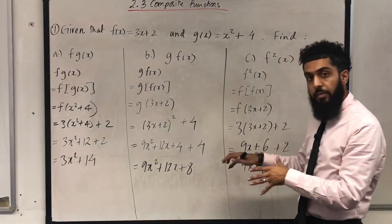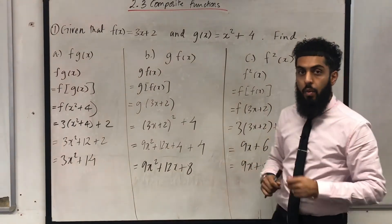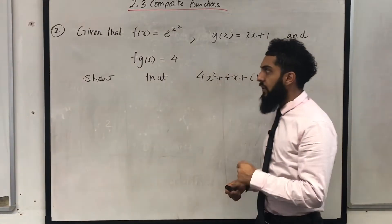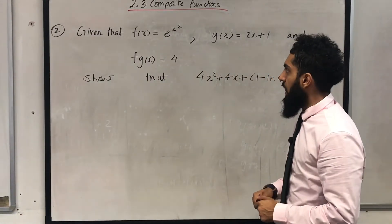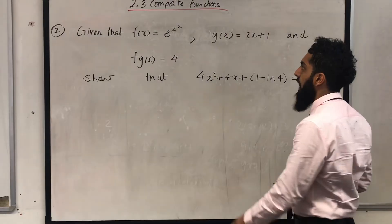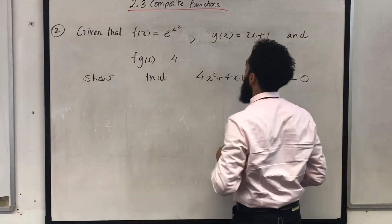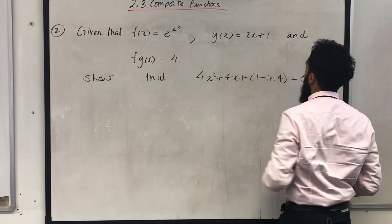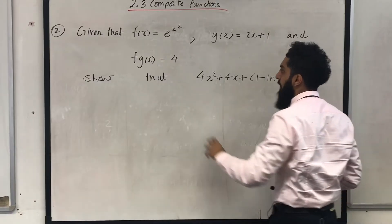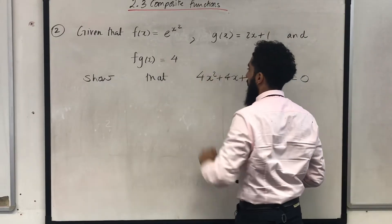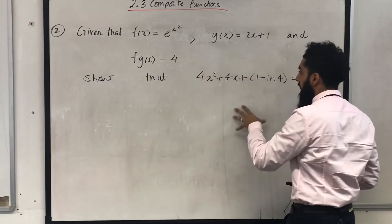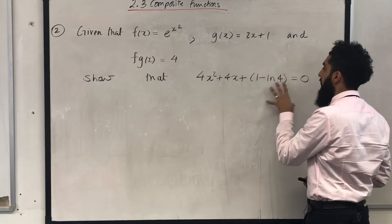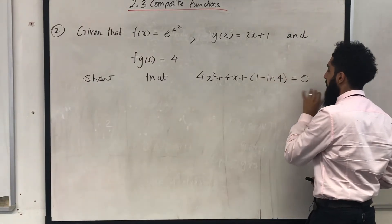That completes question number 1. Let's have a look at example number 2. Given that f(x) = e^(x²), g(x) = 2x + 1, and f(g(x)) = 4, show that 4x² + 4x + 1 − ln 4 = 0.